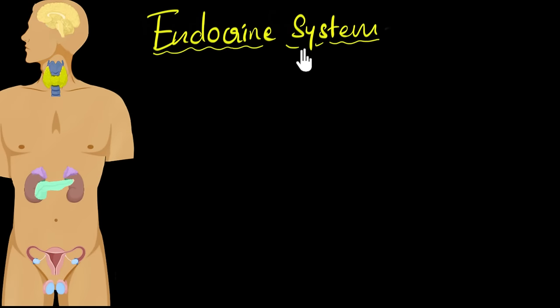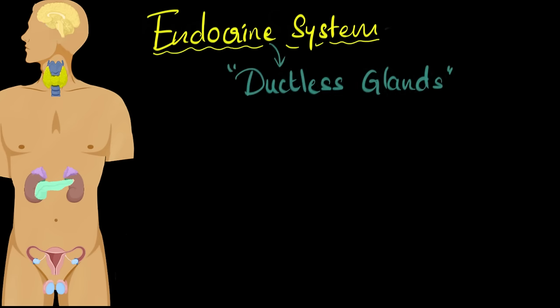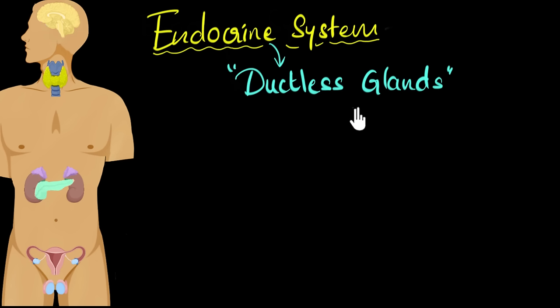Let's look at what the endocrine system means, what are the different hormones that they produce and what their functions are. So let's start with what's an endocrine system. An endocrine system is a bunch of ductless glands which are found in our body. That's what we're gonna study — what these glands are.